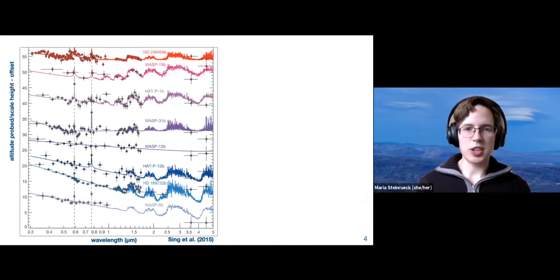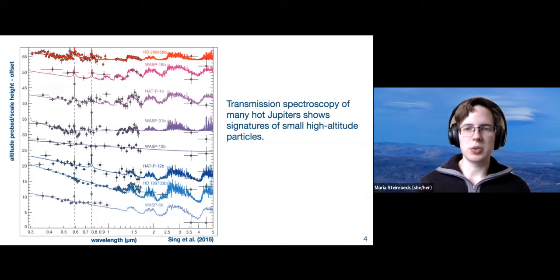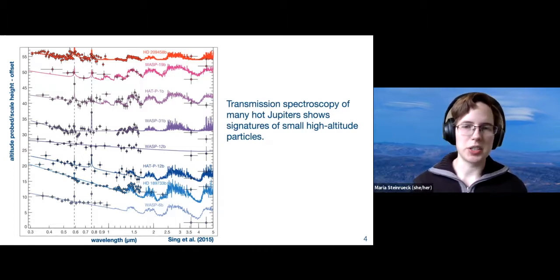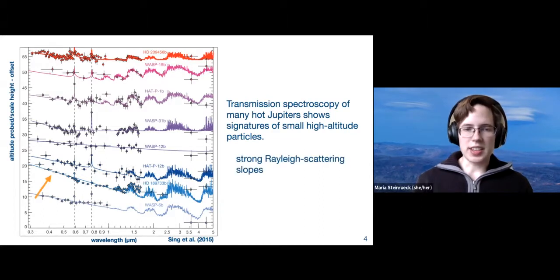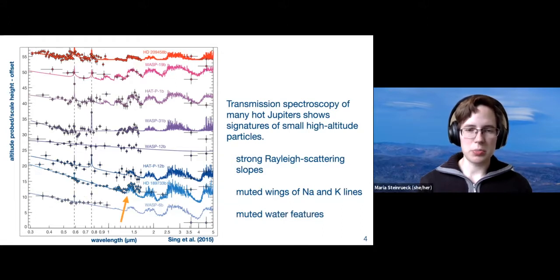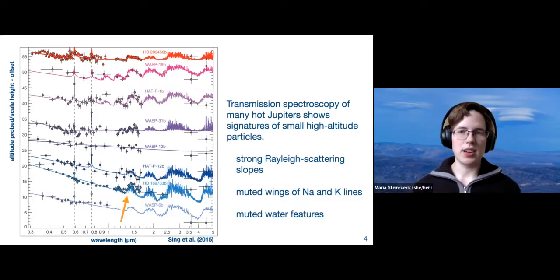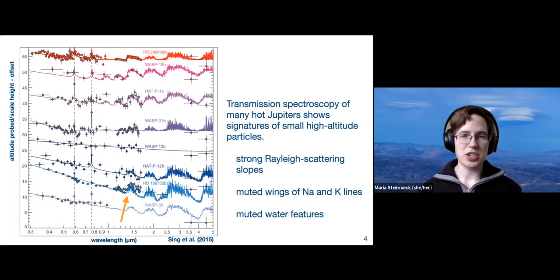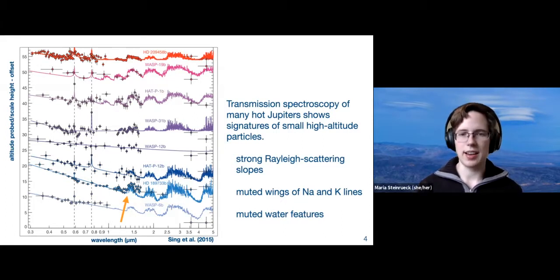We have a quite large set of transit observations of different hot Jupiters by now. Many of these transit spectra show signatures of small particles at high altitudes. One signature is a strong Rayleigh scattering slope. The second is muted wings of the sodium and potassium lines. And the third is that the water feature is also muted—lower amplitude than we would expect for a clear atmosphere. It has been shown by Singh et al. 2015 that there's a clear correlation between these features, giving us confidence that these are actually small aerosols in their atmospheres.